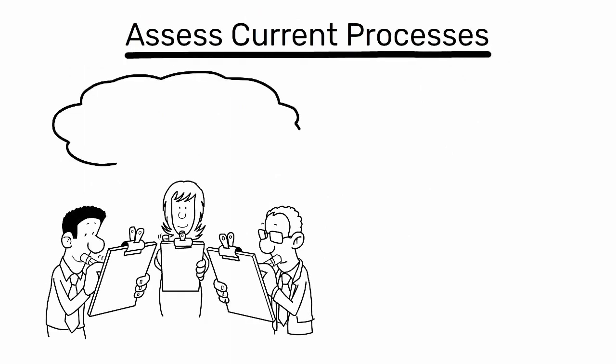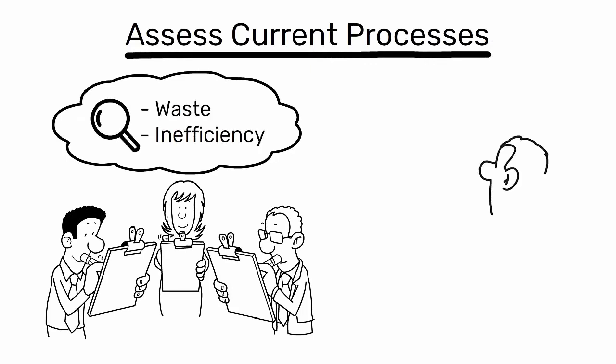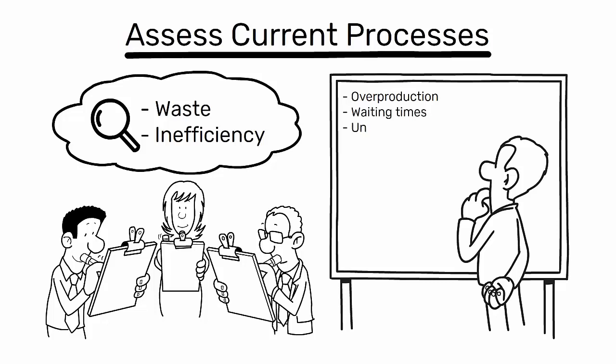Second, assess current processes. Conduct a thorough assessment of current construction processes to identify areas of waste and inefficiency. This could include overproduction, waiting times, unnecessary transportation, excess inventory, over-processing, defects, and underutilized talent.